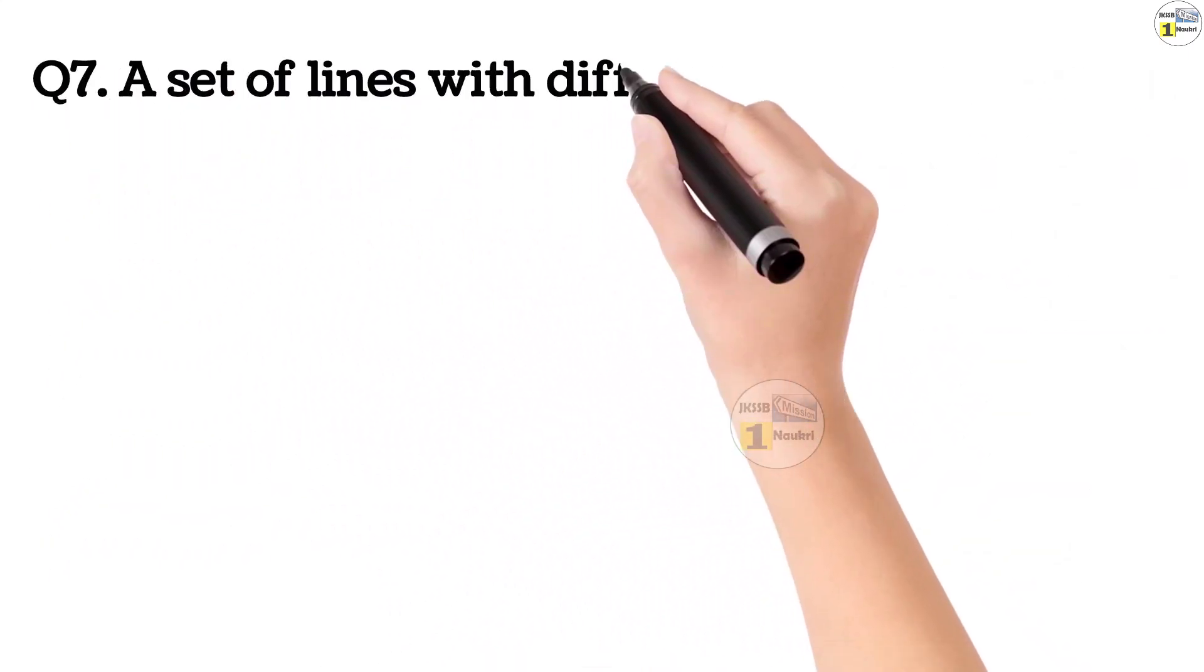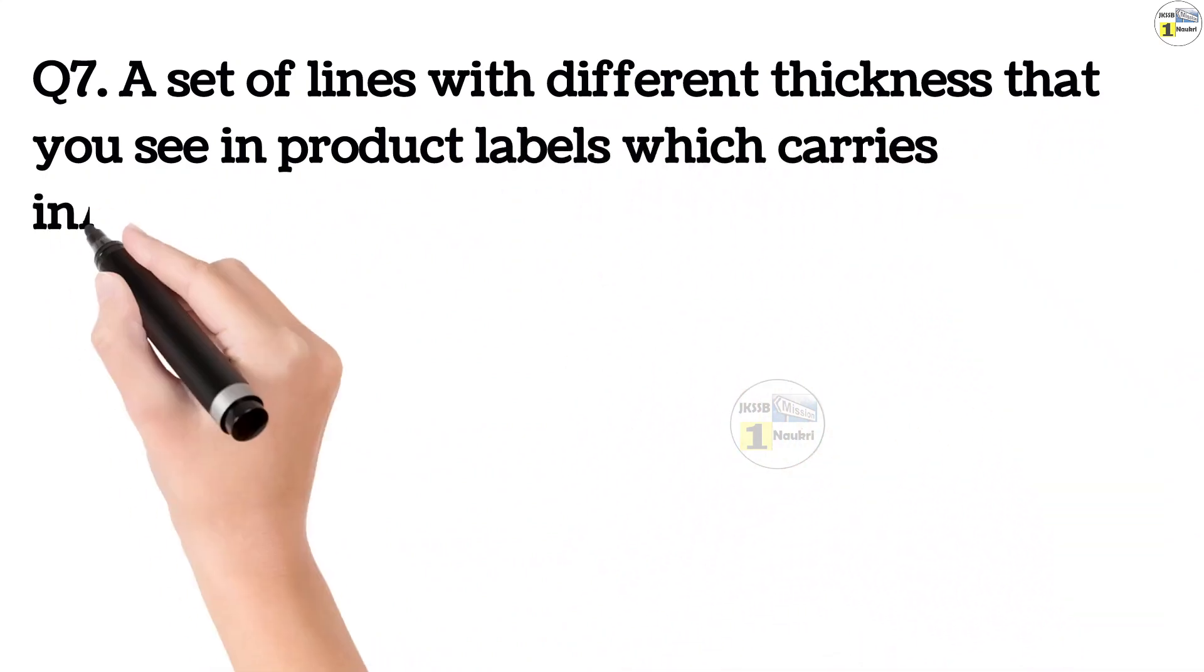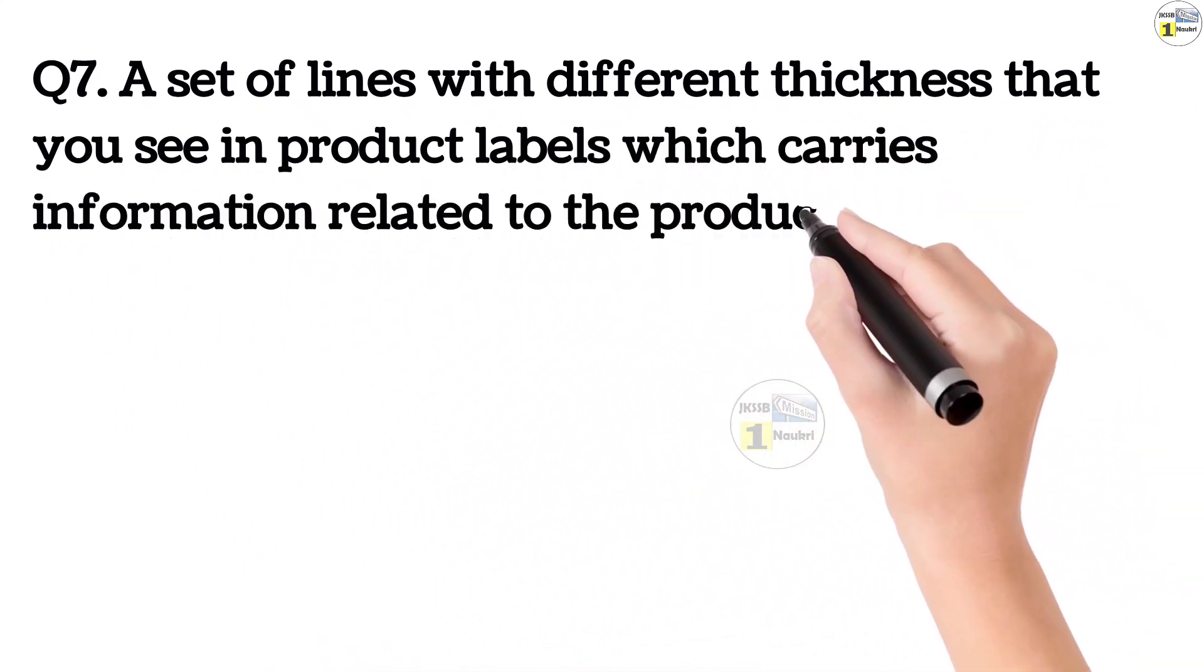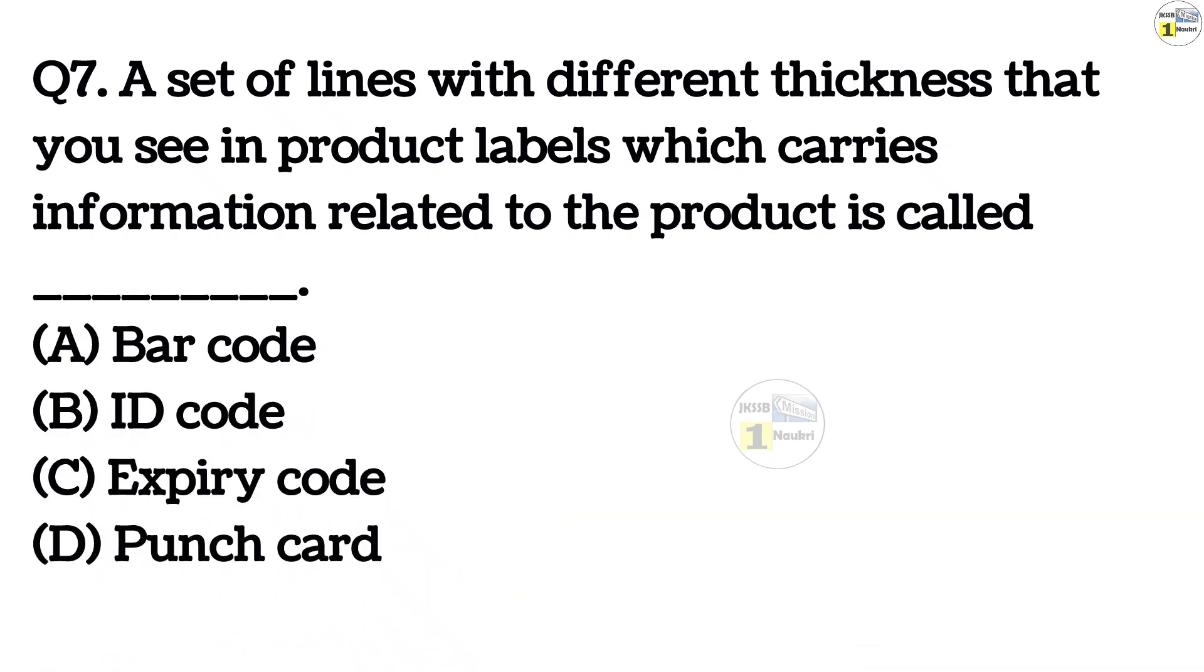Question number 7. A set of lines with different thickness that you see in product labels which carries information related to the product is called Option A, barcode. Option B, ID code. Option C, expiry code. Option D, punch card.